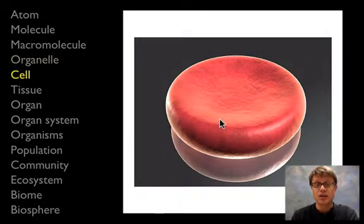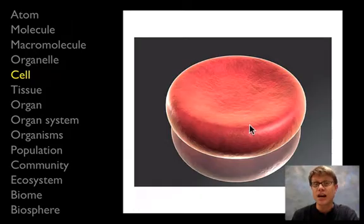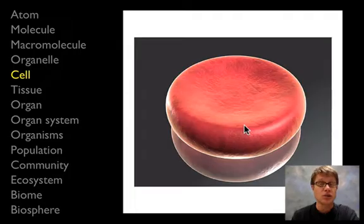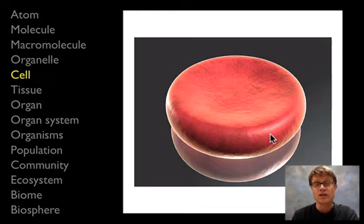Speaking of cells, this would be a red blood cell. A red blood cell is going to have that plasma membrane inside it, but it's also going to have the hemoglobin protein. Its emergent property is that it can move around and actually grab oxygen and then move that to different parts of the body.